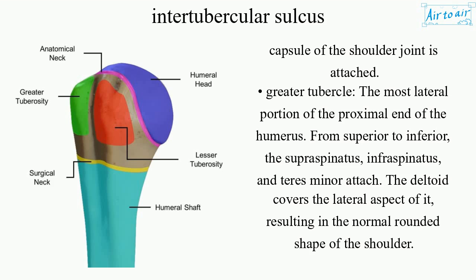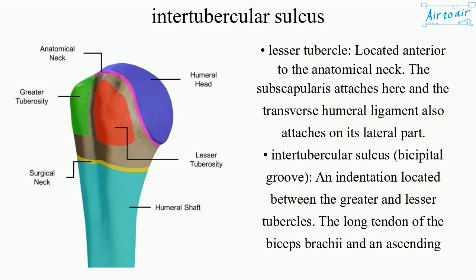Lesser tubercle: located anterior to the anatomical neck. The subscapularis attaches here, and the transverse humeral ligament also attaches on its lateral part.